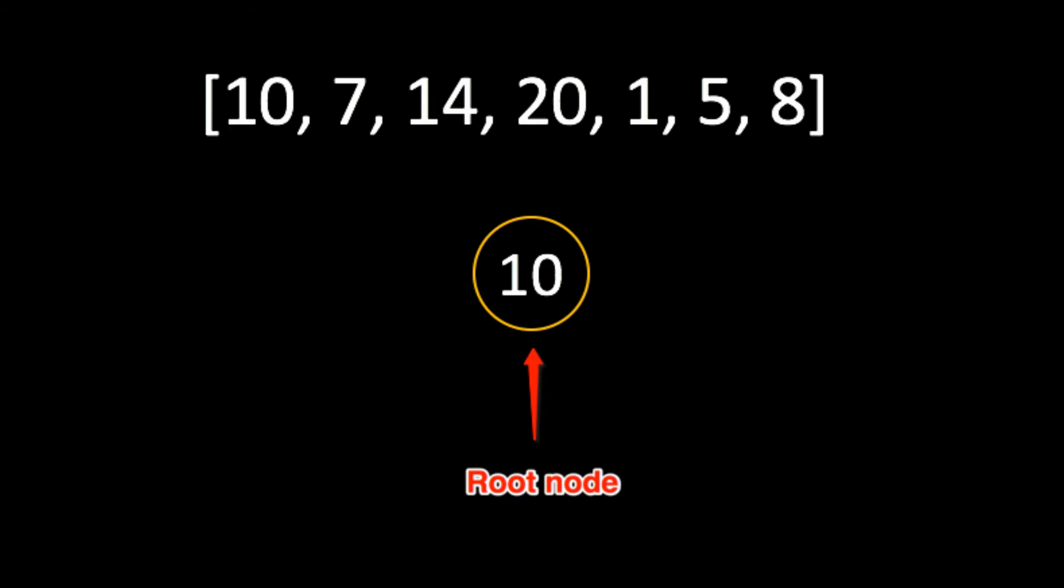With the root node set, all the remaining values will be children of that node. Referencing our rules from the beginning of this post, we know that child nodes will be designated as the right or left node, depending on their value.